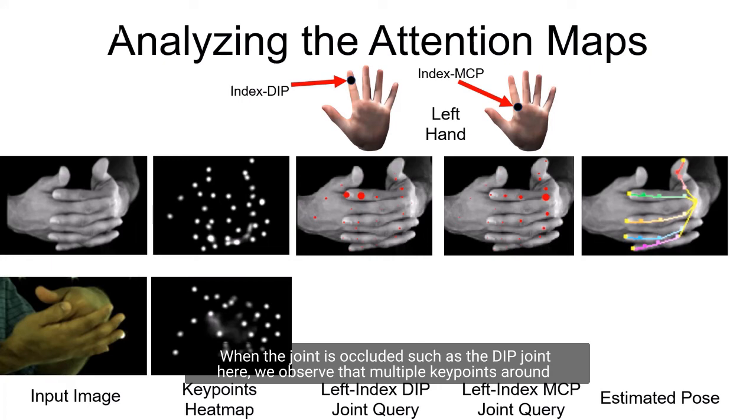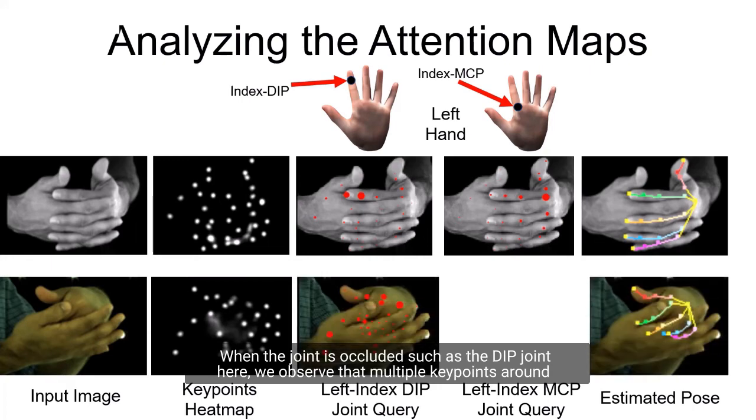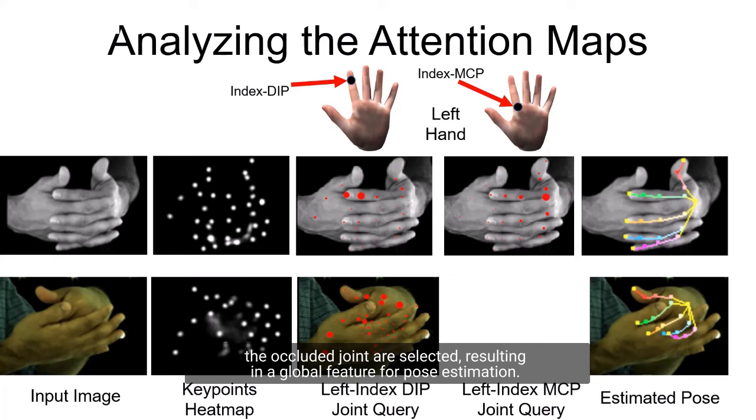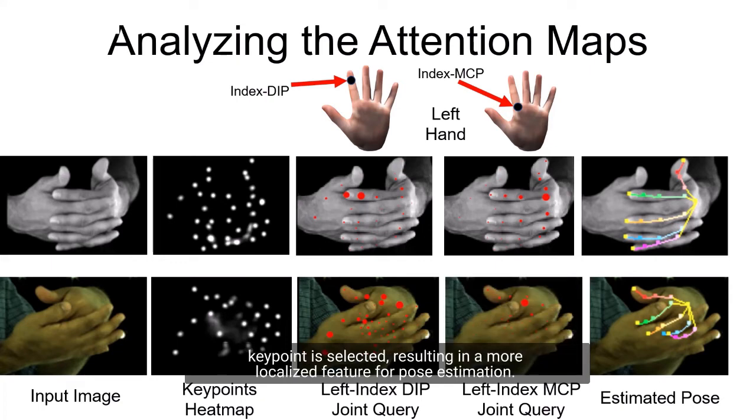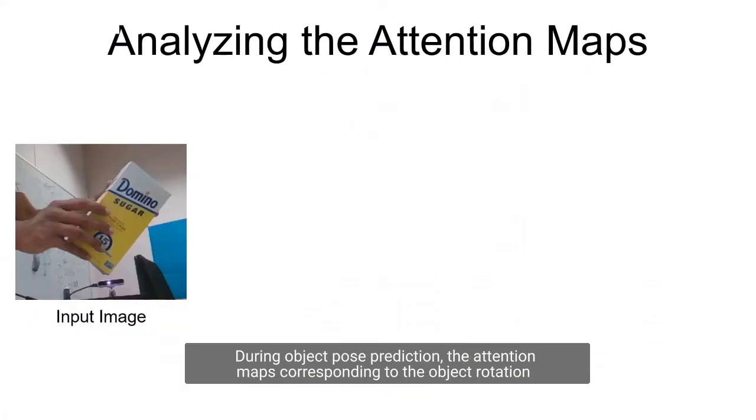When the joint is occluded such as the DIP joints shown here, we observe that multiple keypoints around the occluded joints are selected resulting in a global feature for pose estimation. When a joint becomes visible again such as the MCP joint shown here, the corresponding keypoint is selected resulting in a more localized feature for pose estimation.